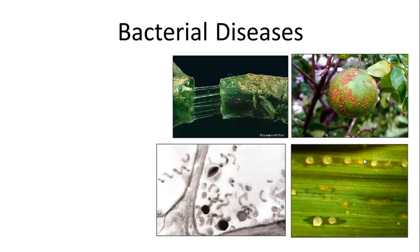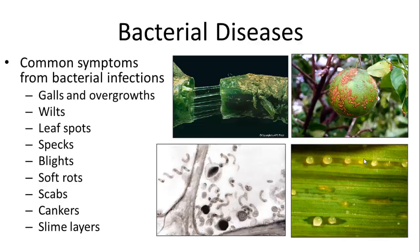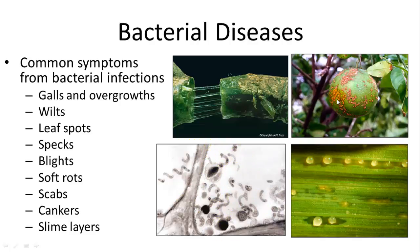Now we'll talk about actual diseases. Common symptoms from bacterial infections include galls and overgrowth, wilts, leaf spots, specks, blights, soft rots, scabs, cankers, and slime layers. Bacteria often form slimes — here's bacteria that has infected the xylem of a leaf forming a biofilm, and here are some Spirella bacteria found within the xylem of another plant cell. These spots on this lime are also caused by bacteria.